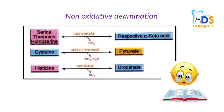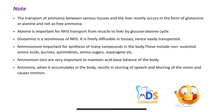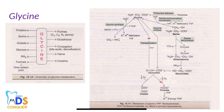For non-oxidative deamination, the examples are pretty clear. Make note of all the important points listed there. Just give a glance to these important points. Next, we will discuss individual amino acids one by one.